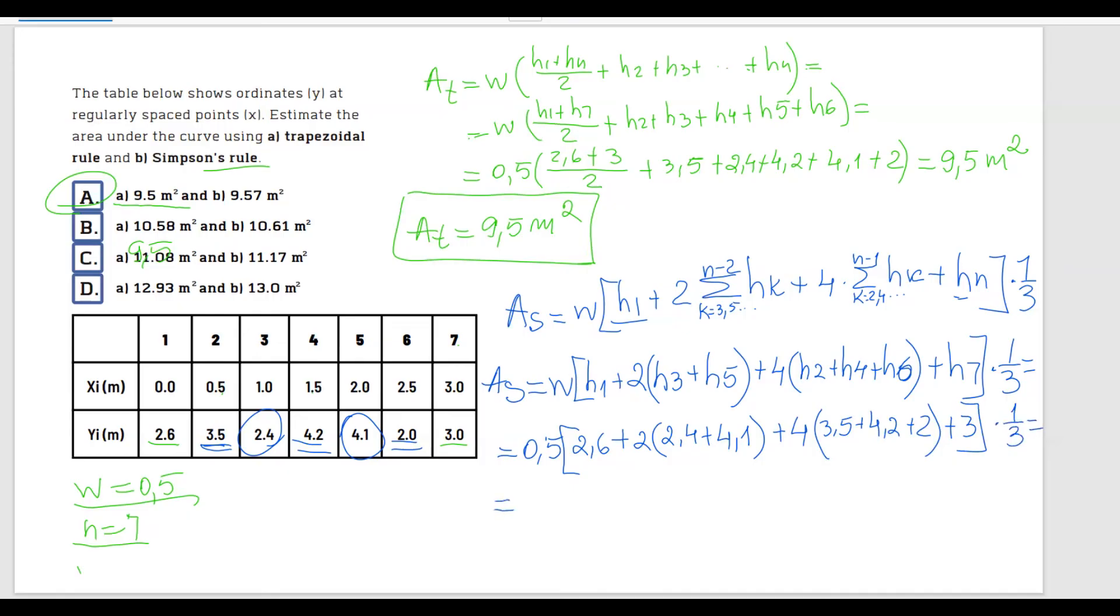Now use your calculators and you should get an area equal to 9.57 meters squared. So let me write down this here as equals to 9.57 for the area using Simpson's rule is equal to 9.57 meters squared.